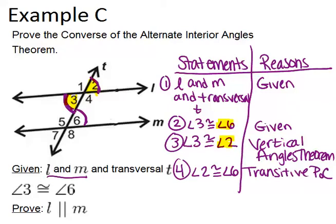So now that I know that angle 2 and angle 6 are congruent, those angles are corresponding angles. And any time you have corresponding angles are congruent, we know that the two lines have to be parallel. So we're ready for our last step, which is to say what we're trying to prove.